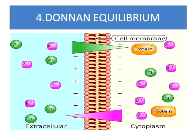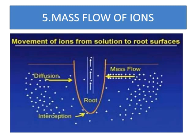The last mode of passive absorption is mass flow or bulk flow of ions occurring towards the root surface. Kramer stated that ions move through roots to the shoot along with the mass flow of water. The force responsible for this bulk flow is transpiration pull, created in the leaf due to the loss of water vapor during transpiration. This concludes the mineral absorption occurring by passive mode.